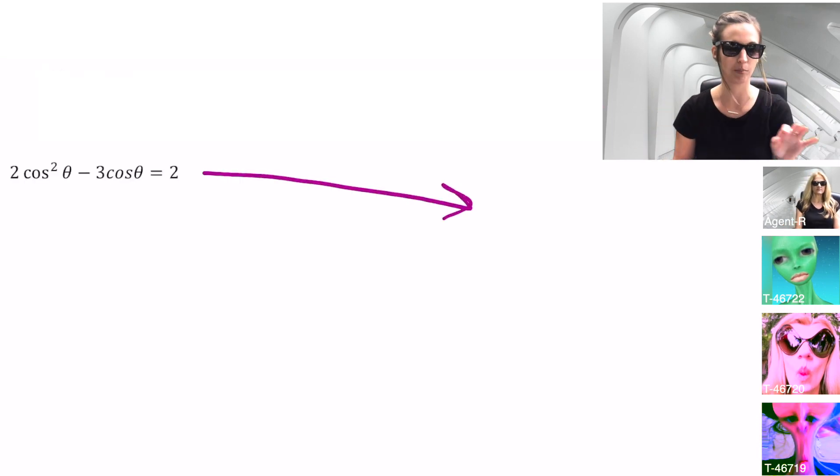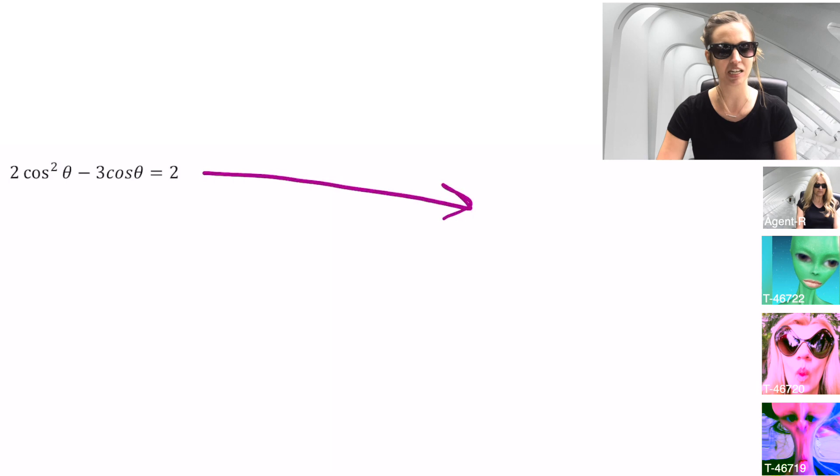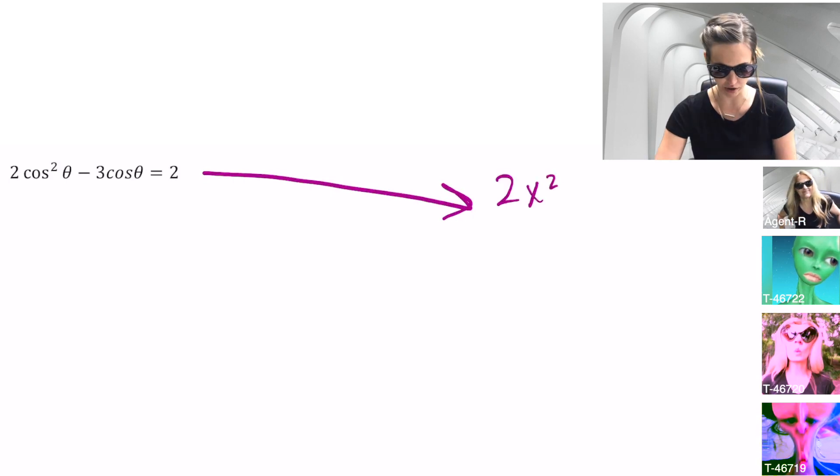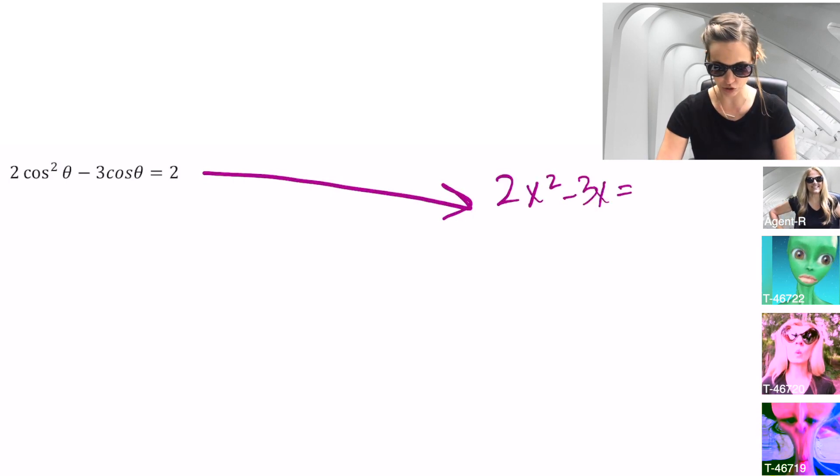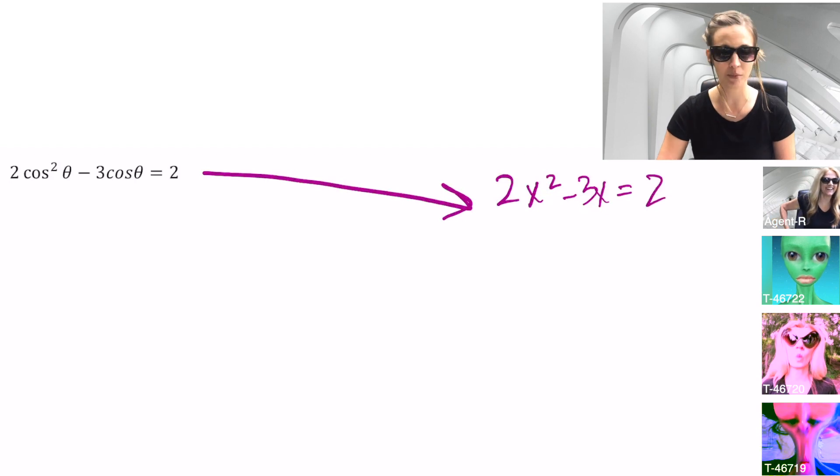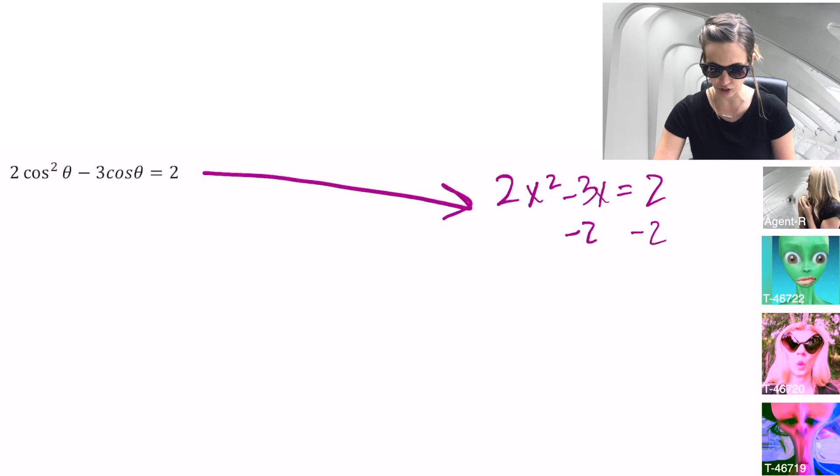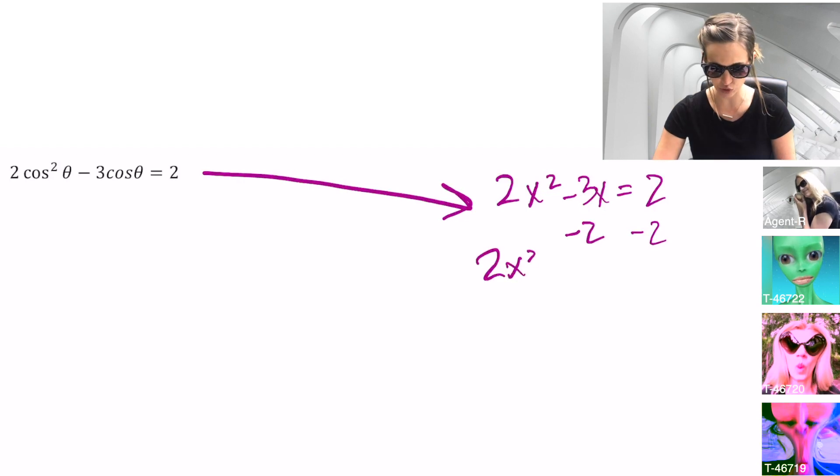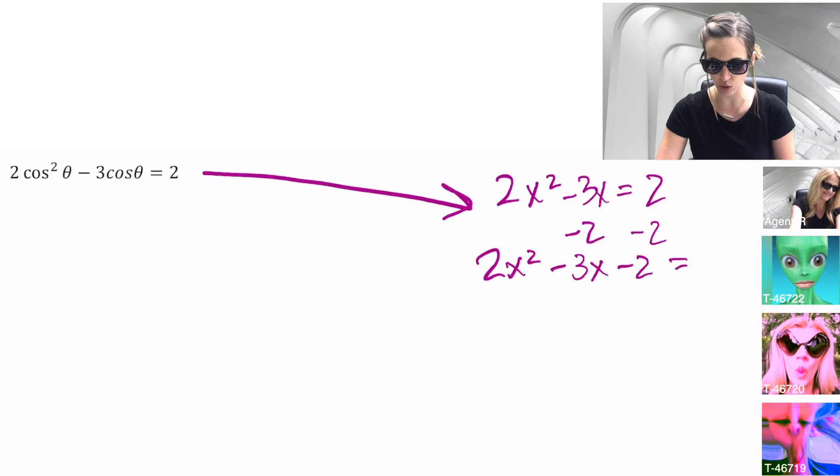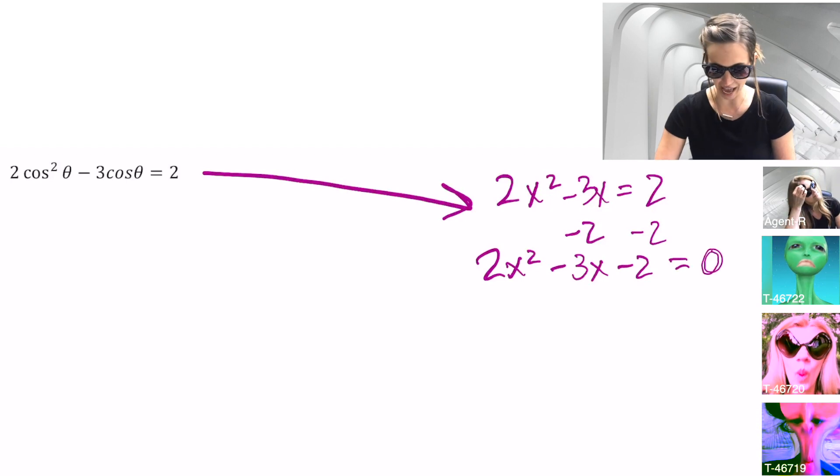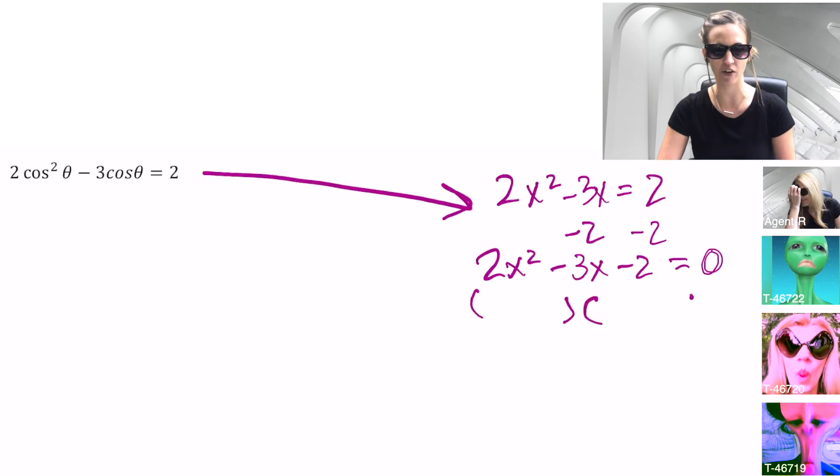It might help to try to think of this outside of trigonometry and see what we can relate to our prior training. So if I replace my cosines right now just with a variable, 2x squared minus 3x equals 2. That's something that we're familiar with. We know how it works. That's a quadratic equals 2. I would subtract the 2 to the other side and get 2x squared minus 3x minus 2 equals 0.